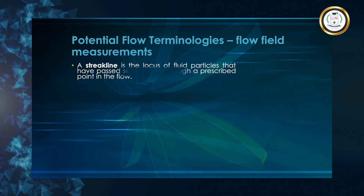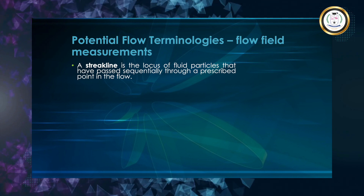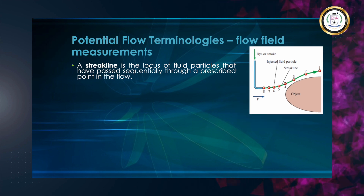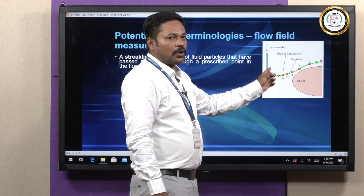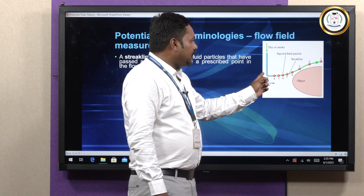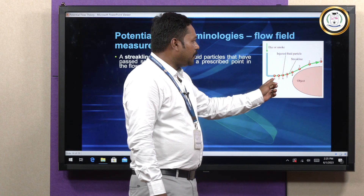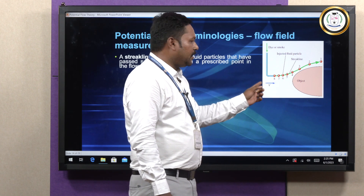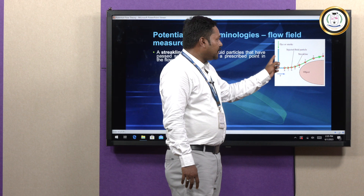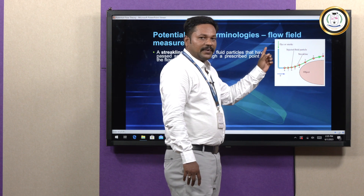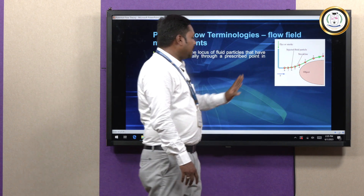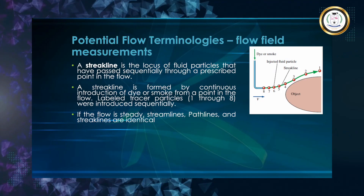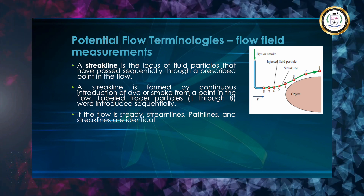We are going to discuss about streakline. Streakline is nothing but the fluid particles that have passed sequentially through a prescribed point. For example, we inject smoke or dye at a point, and these injected fluid particles will impact on the object. The flow having normal uniform flow on one side and the dye or smoke flow ingested on the other side — we will be seeing the streakline of the flow. The tracer particles from one to eight were introduced sequentially.